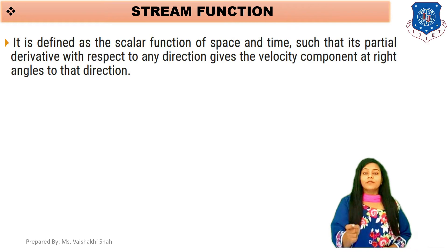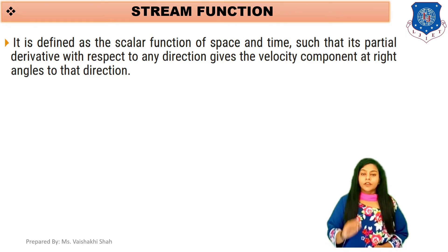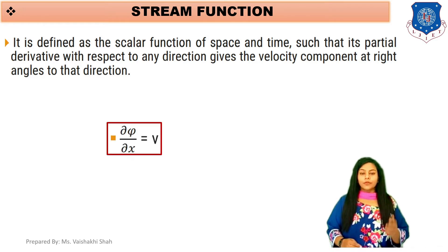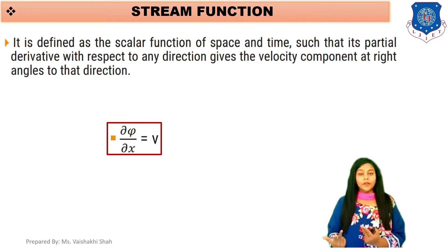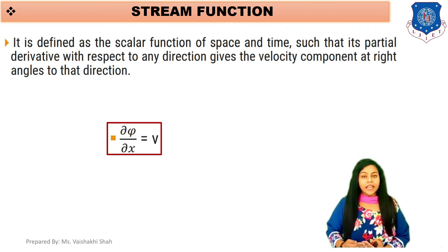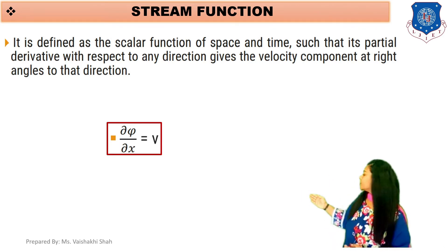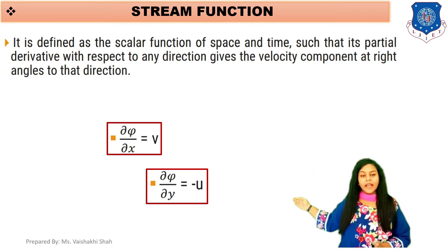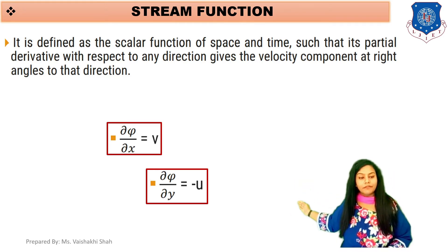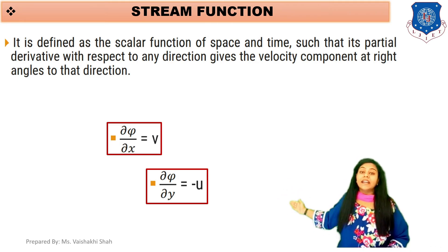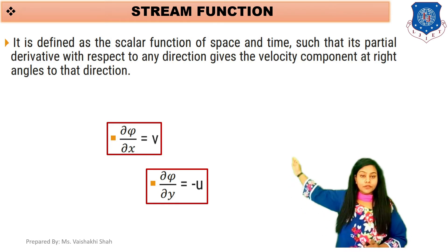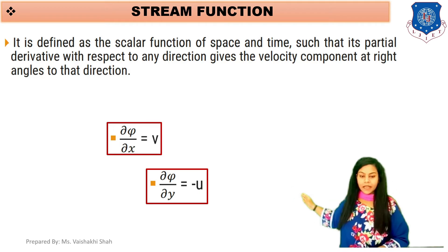The velocity component and direction are at right angle to each other. The directions are x, y, and z, and velocity components are u, v, and w — both are orthogonal to each other. So the equation for v becomes del psi by del x, because the component and direction are orthogonal. Therefore: v equals to del psi upon del x, and u equals to minus del psi by del y. Note that v is a positive term and u is a negative term, so u equals to minus del psi by del y.